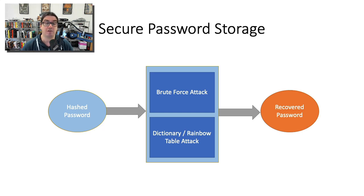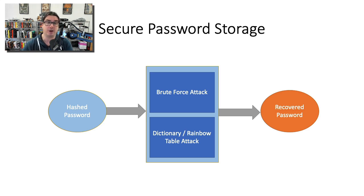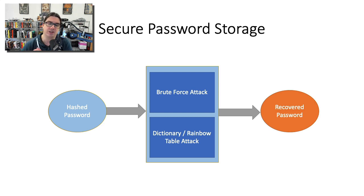Another type of attack is called a rainbow table or dictionary attack. This is where you have a huge pre-computed dictionary of passwords and their hashes. You take the hashed password, check it in the dictionary, and if it's in there it will tell you what that password was. These dictionary files are multiple gigabytes in size and you can freely download them off the internet, so that's another big potential attack vector against a hashed password.